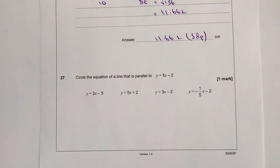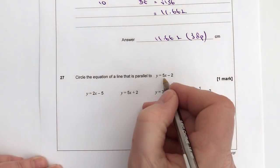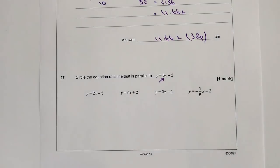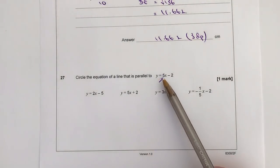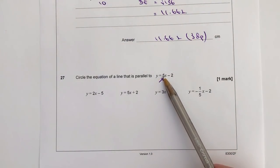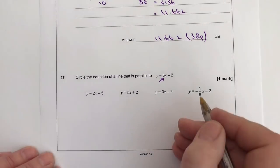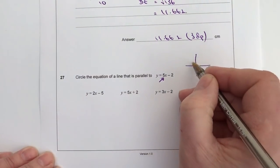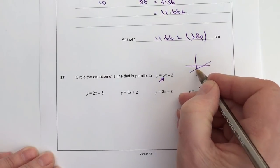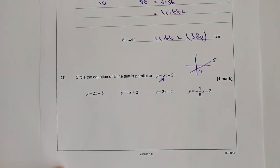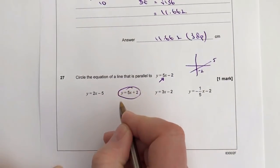Question number 27. Circle the equation of a line that is parallel to y equals 5x minus 2. Well, parallel basically means that the value of this here, which is the gradient, is the same. So with parallel lines, in this particular case, what we've got is a line that actually looks like that, where that's minus 2, and this is a gradient of 5.